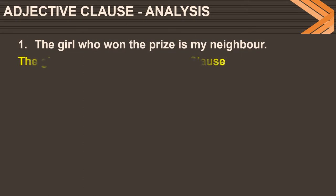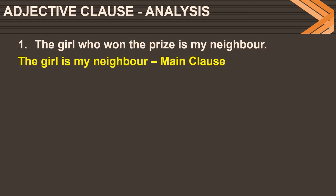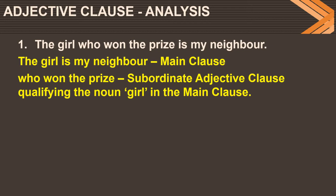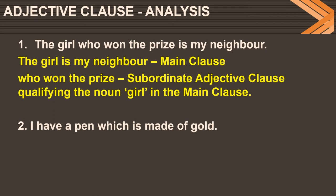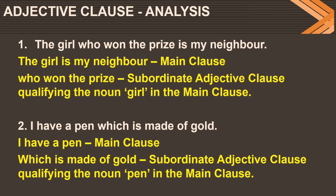Now, how to do the clause analysis for an adjective clause? For 'The girl who won the prize is my neighbor': the main clause is 'The girl is my neighbor,' and 'who won the prize' is a subordinate adjective clause qualifying the noun 'girl' in the main clause. For 'I have a pen which is made of gold': the main clause is 'I have a pen,' and 'which is made of gold' is a subordinate adjective clause qualifying the noun 'pen' in the main clause.